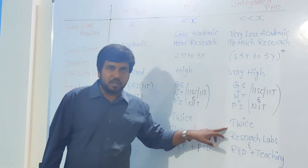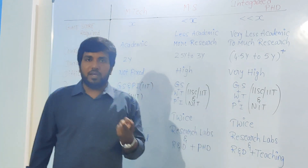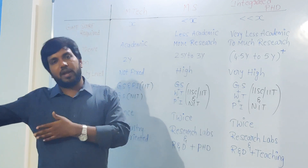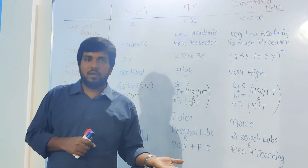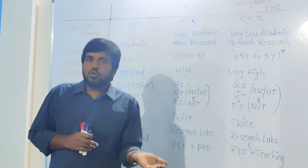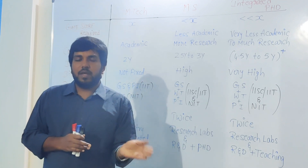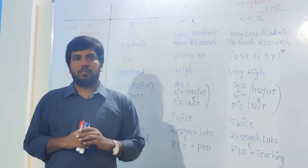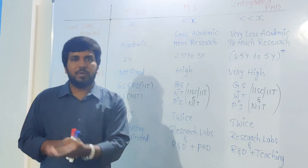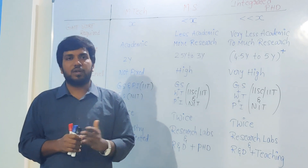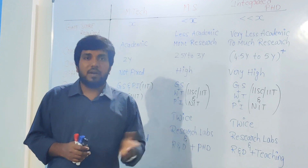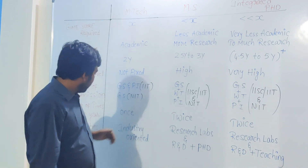For MS and integrated PhD, admissions are open twice a year: a January admission and a July admission. For January admission, the notification is released in December, and selected students are allotted admission in January. For July admission, the notification is released in April, and by the first week of July students are allowed to begin their MS or integrated PhD course at the respective IIT or NIT.